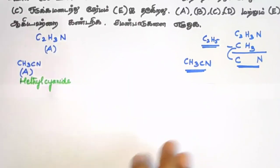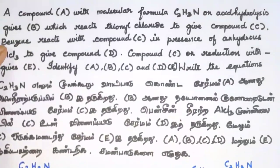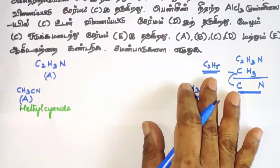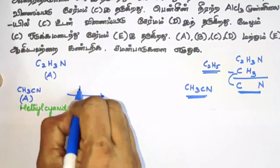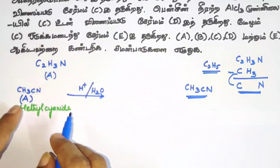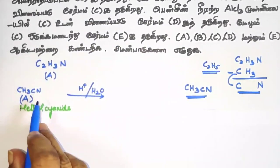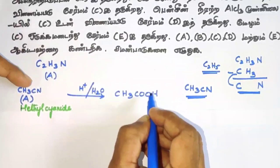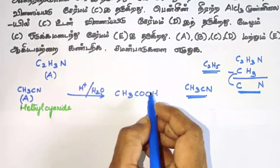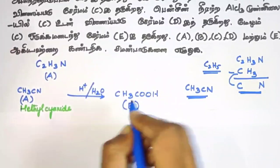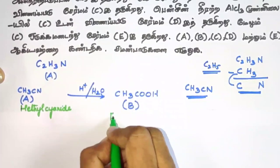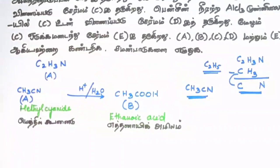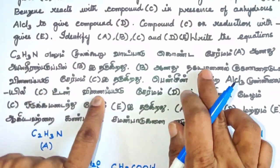Methyl cyanide on acid hydrolysis — with H+ and H2O — the cyanide group hydrolyses to give a carboxylic acid (–COOH). So cyanide on hydrolysis gives an acid; that compound is B, which is ethanoic acid (acetic acid, CH3COOH).